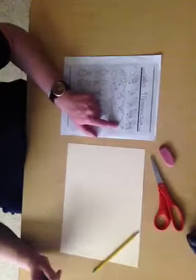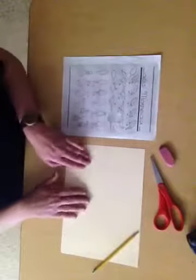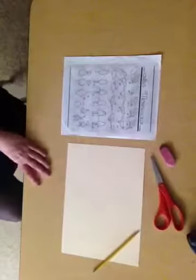To begin you're going to look at the object that you'd like to draw. So I'm actually going to draw this bird. I want to make sure that my pattern is going to be the same size to fit on my fabric.